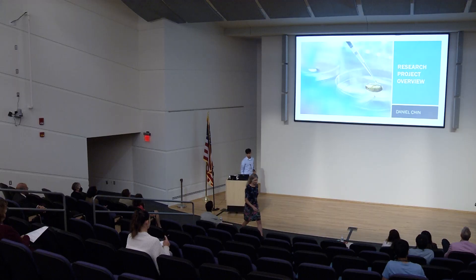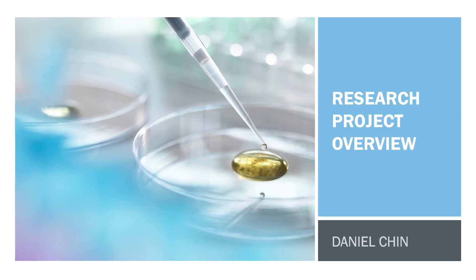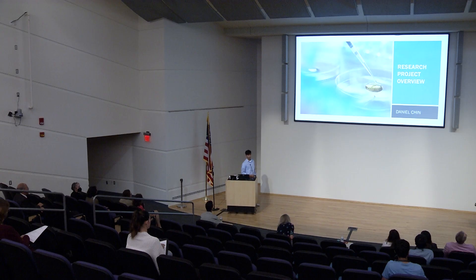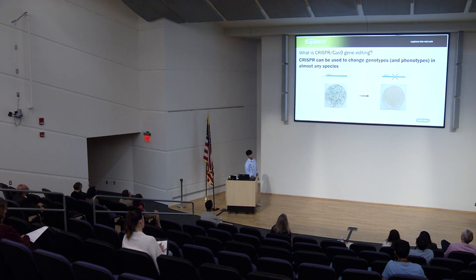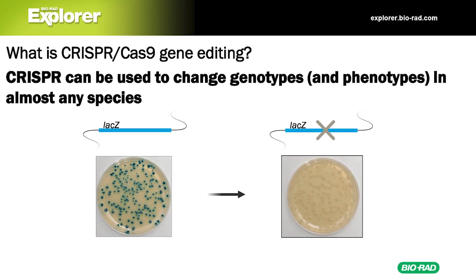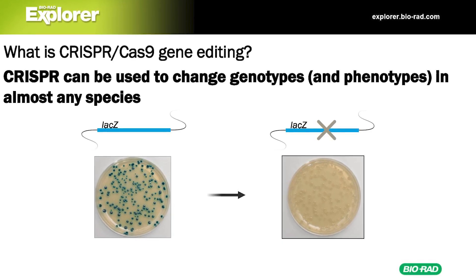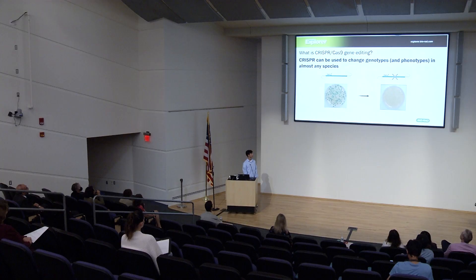Good afternoon everyone. My name is Daniel Chin and I am an early college student at Montgomery College. Thank you Dr. Girada for that introduction. First, I'm going to go over an introduction of what CRISPR-Cas9 editing is. CRISPR can be used to change genotypes and phenotypes — physical characteristics that can be inherited such as eye color and hair color — and this can be done in almost any species.